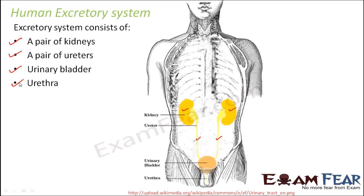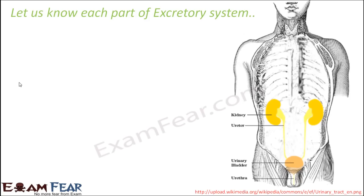Before we understand how excretion takes place — excretion takes place through urine, and urine contains all the waste materials of our body. The most important question is: how is urine formed? To understand urine formation, we need to be aware of the structure of the different parts which help in its formation. So first we will understand the different parts of the excretory system and their structure, and then we will talk about the process of urine formation.